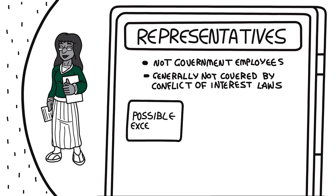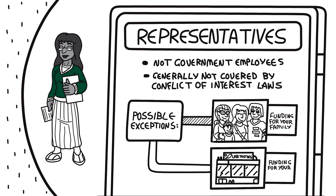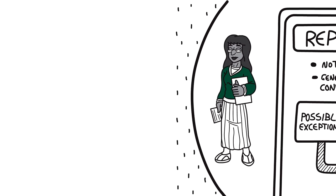One exception would be when representatives are asked to participate on a committee matter that provides funding or gives contracts to their family members or companies that they own. In cases like these, representatives should first consult with their committee's chair, designated federal officer, or agency ethics official.